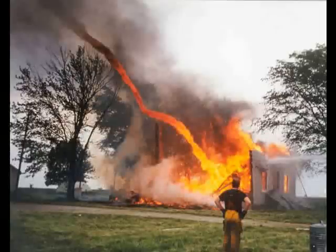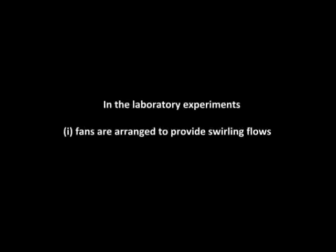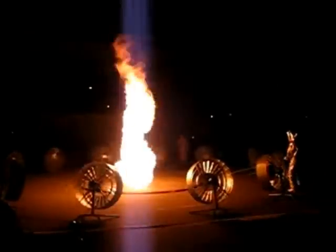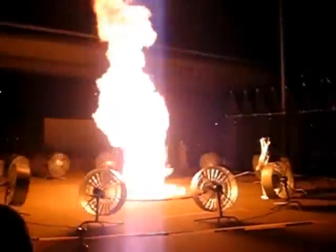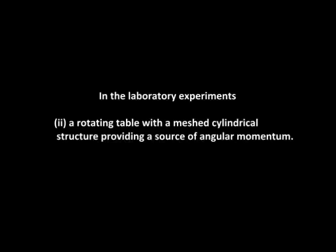A higher heat release rate coupled with an organized source of angular momentum — either from wind shear or from the fire's convection column — must help create large swirl velocities as air is entrained into the fire flow. In the laboratory experiments, fans can be arranged to provide swirling flows, or a rotating table with a meshed cylindrical structure providing a source of angular momentum can be used.